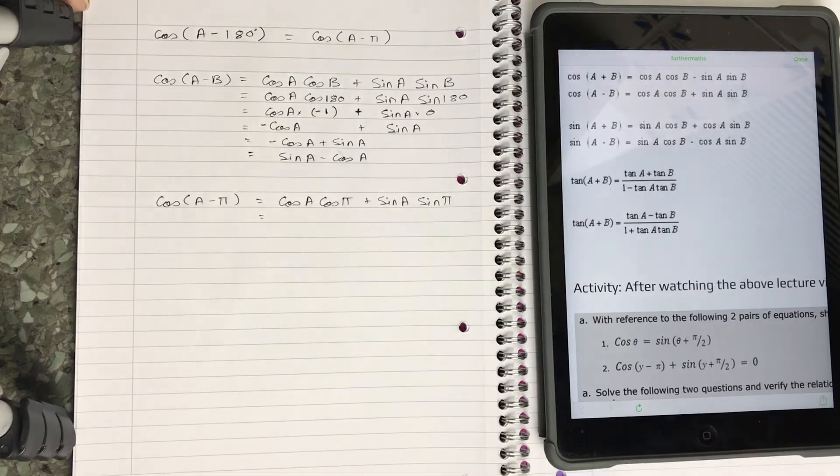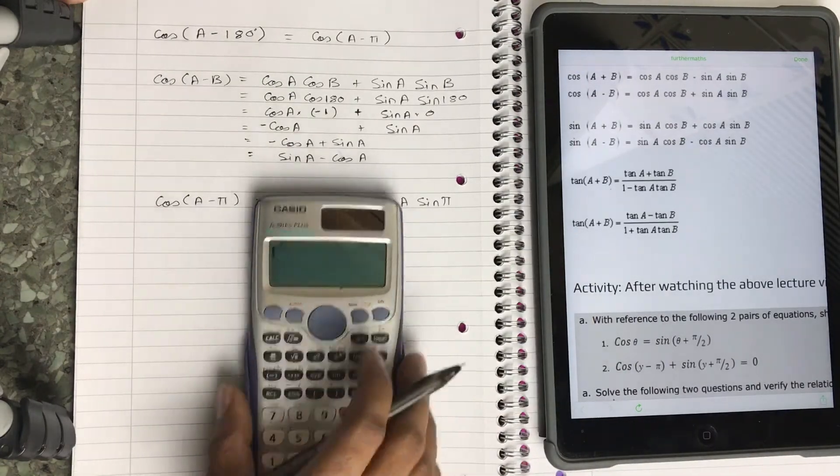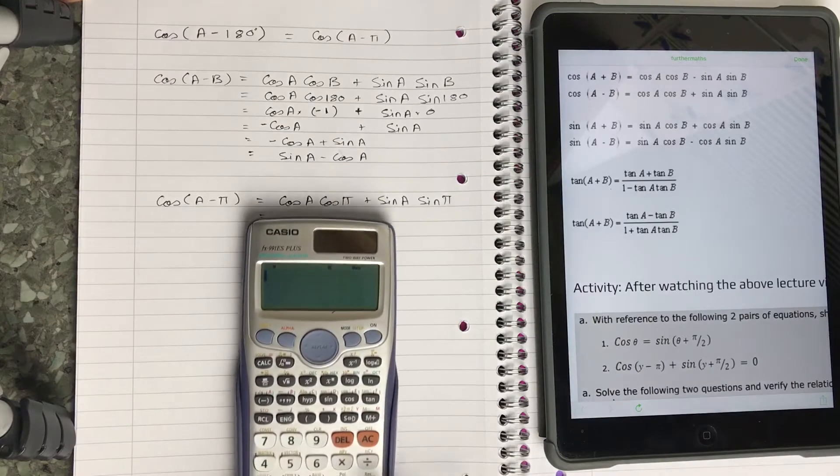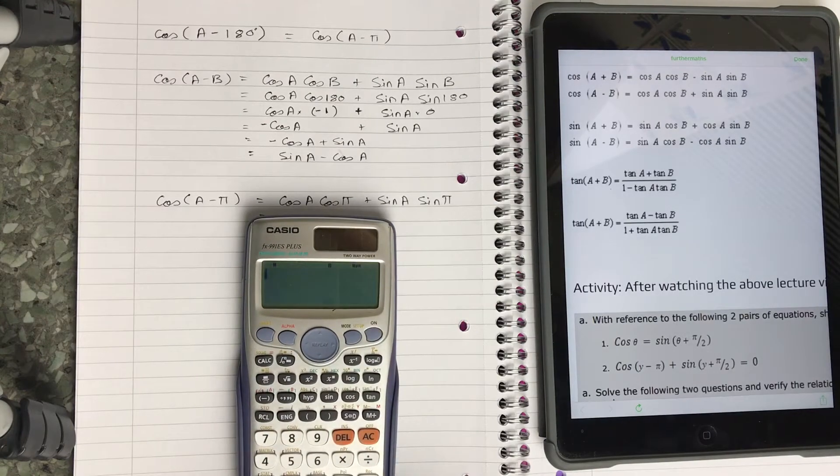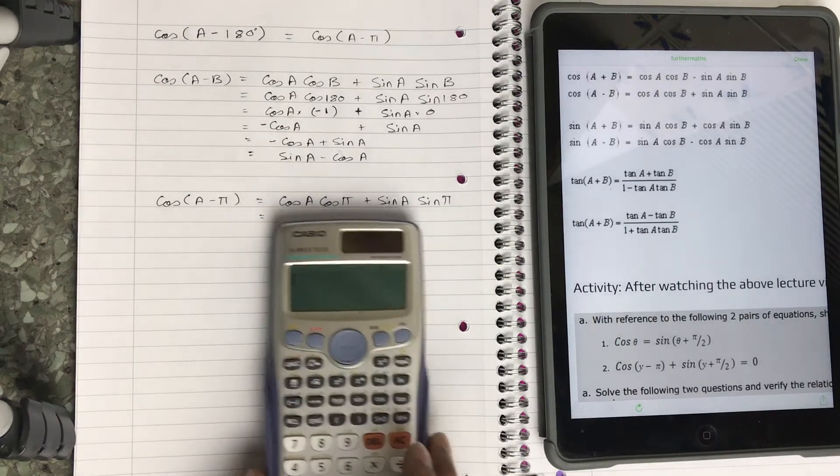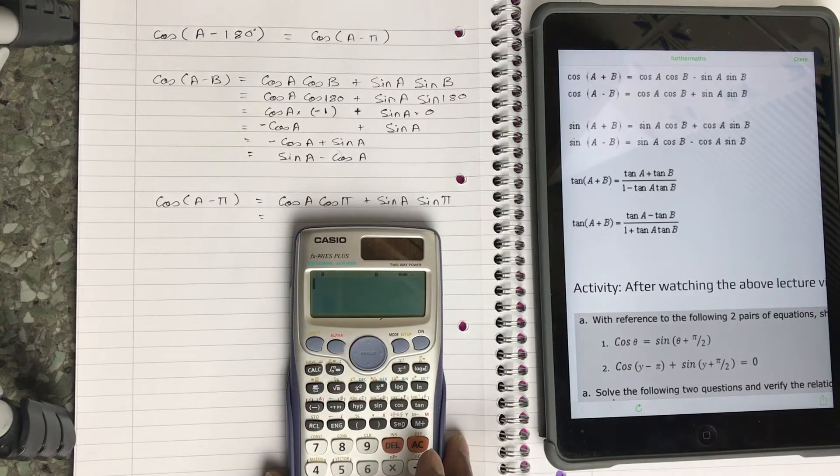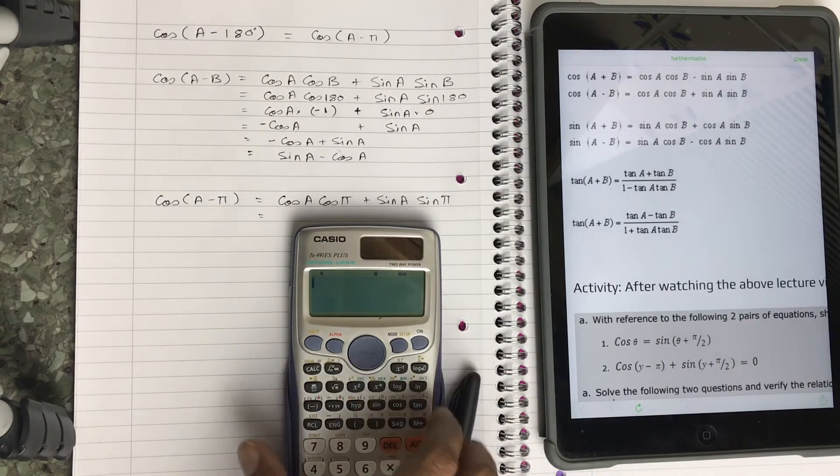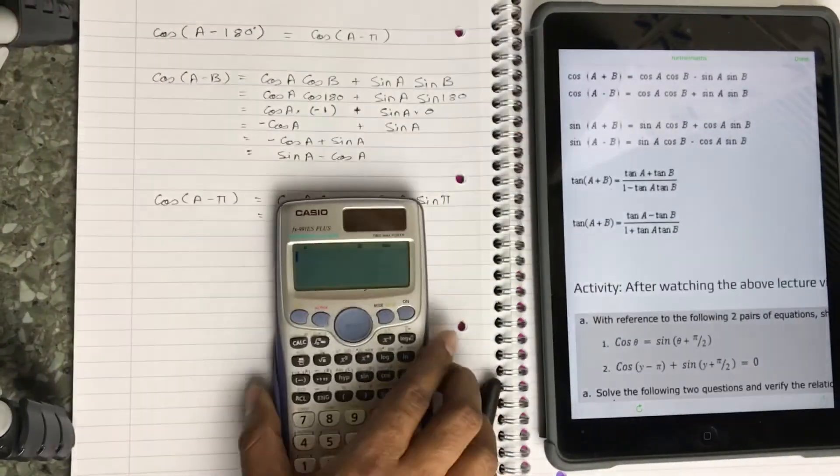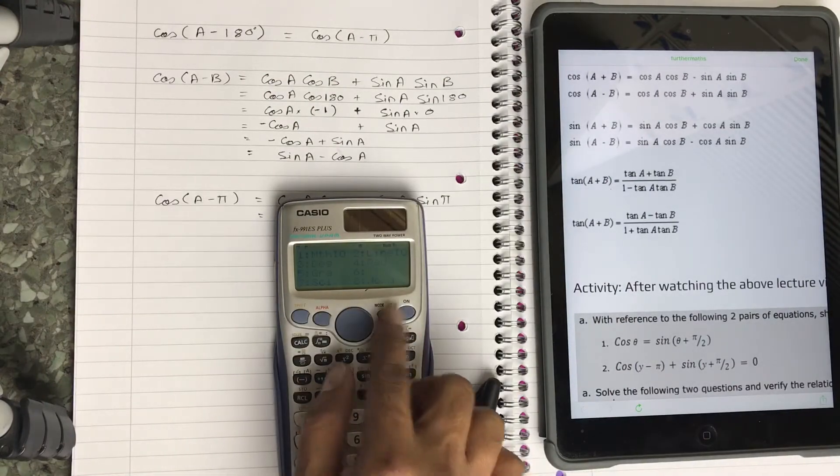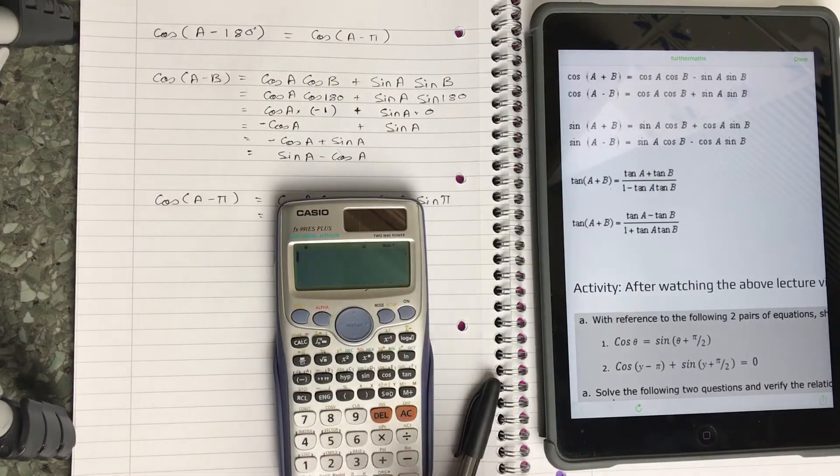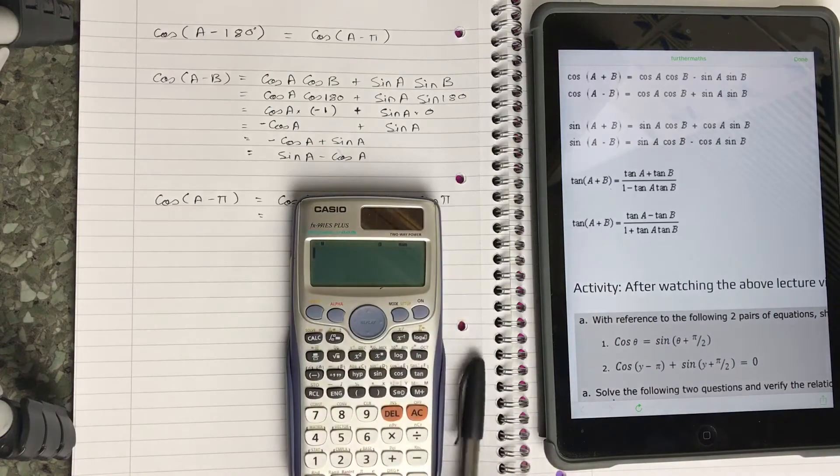Now when solving this, make sure that your calculator is in radian mode, because π is a radian. So now what I'm going to do is change my calculator into radian mode. So again, press shift mode, 4 is radian.